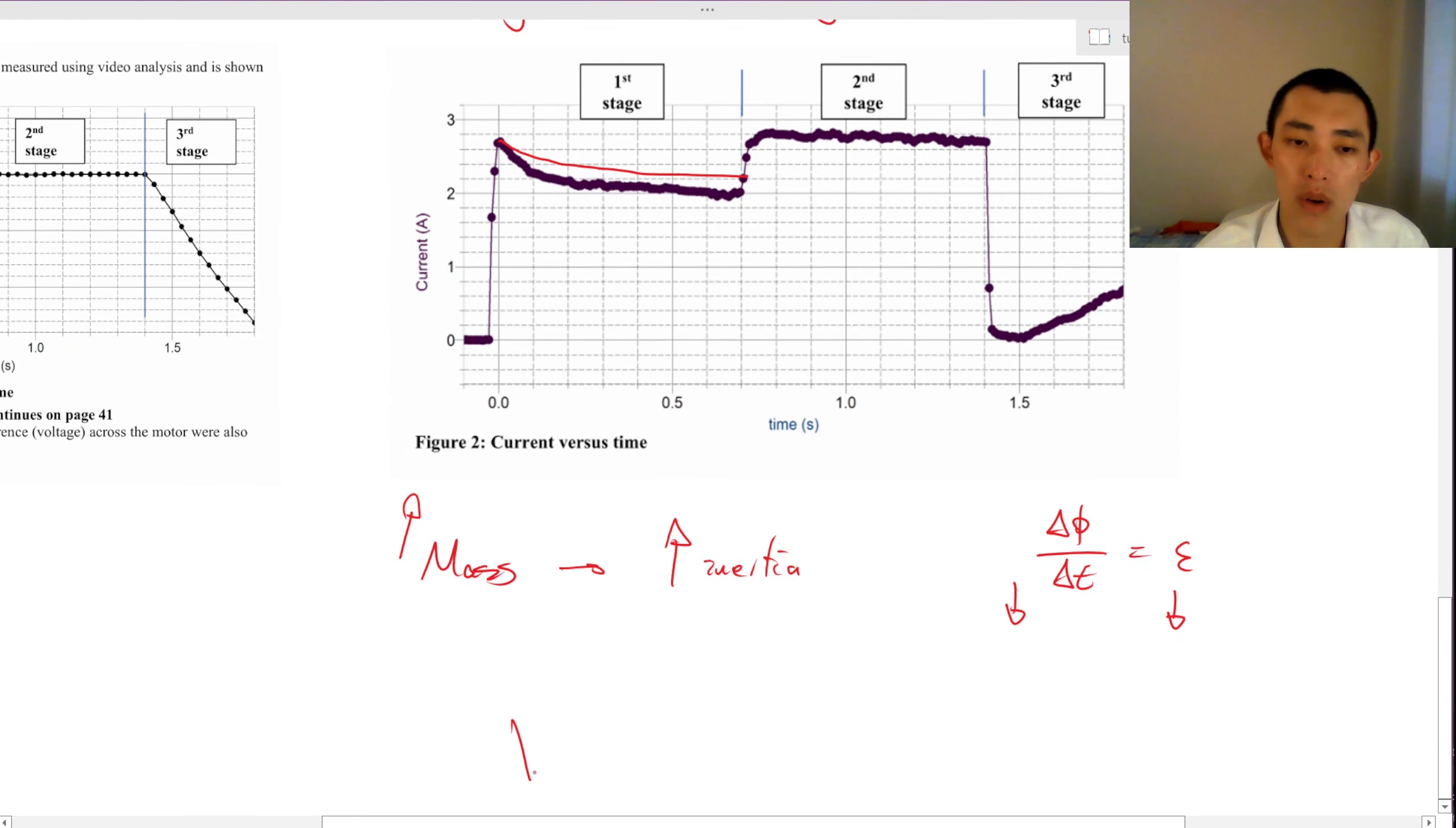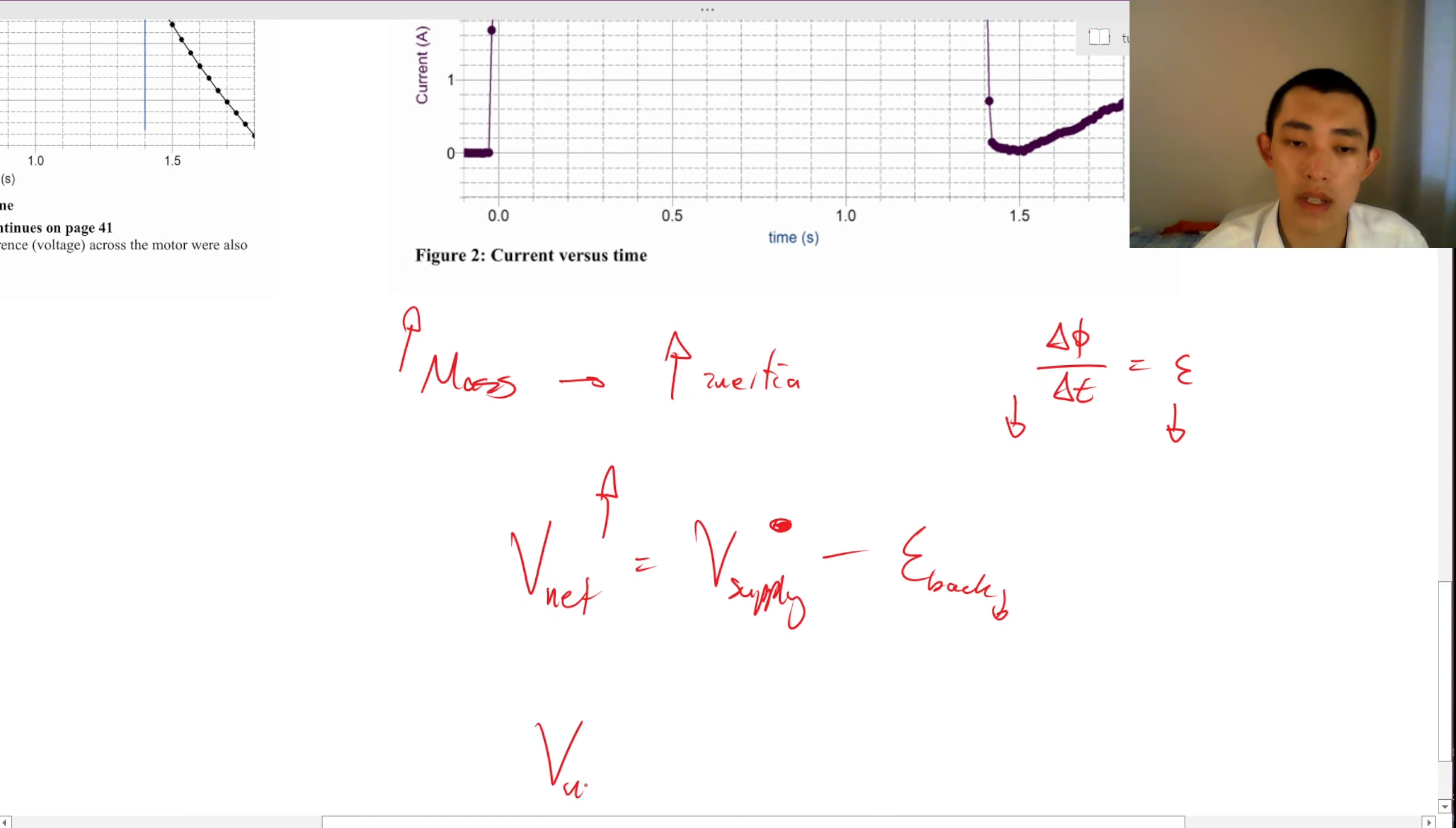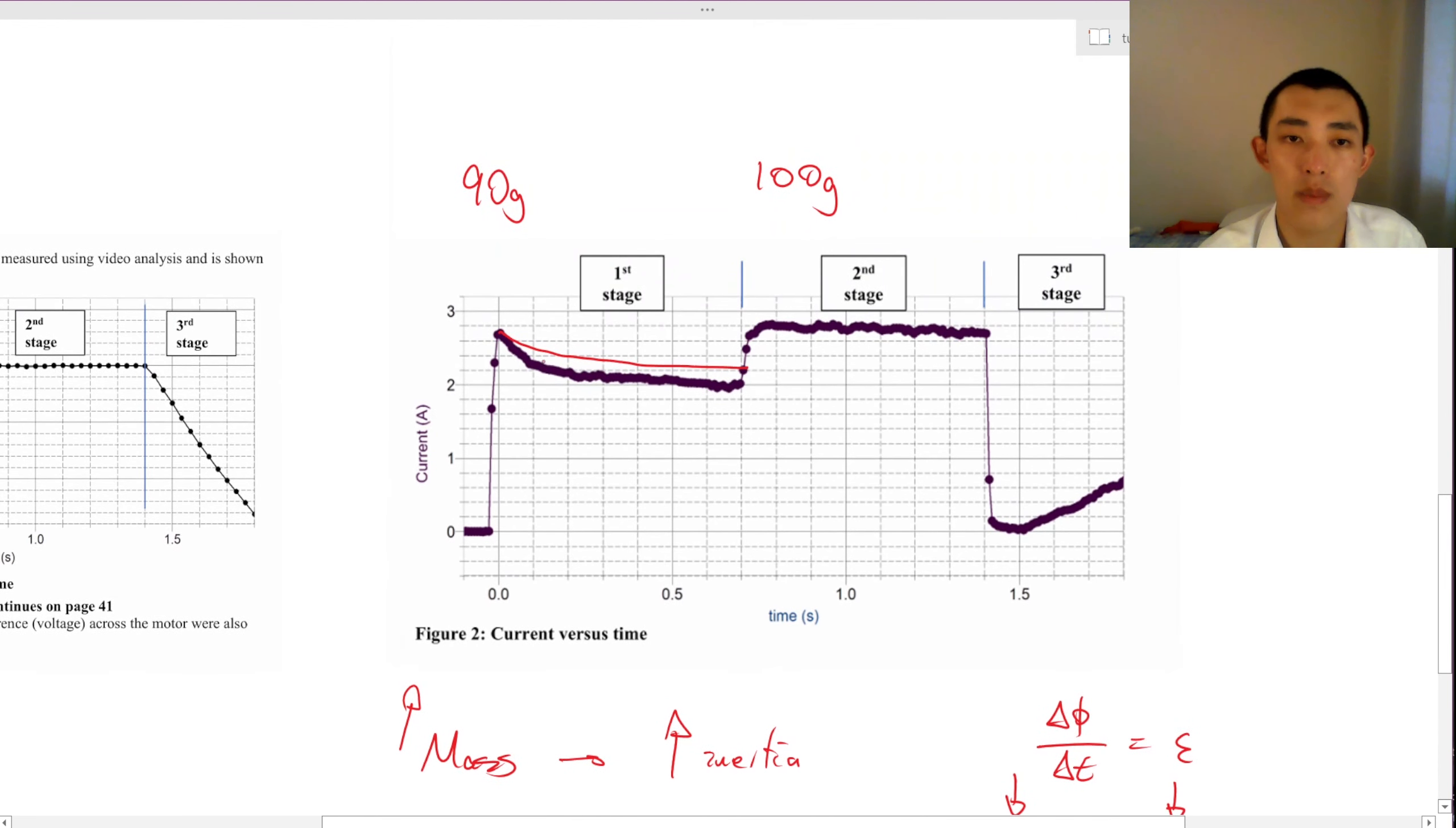If the back EMF is going to be lower, we know that V net is equal to V supply minus back EMF. So if we reduce my back EMF and the V supply is constant, then my net voltage increases. If my net voltage increases, we know that V net is equal to IR. If you increase the V net, you increase the current. That's why it's higher.